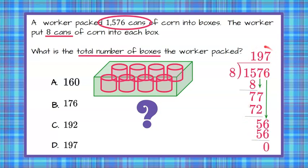So now we know that it's going to be eight cans per box and we're going to need a total of 197 boxes which gives us answer choice D.